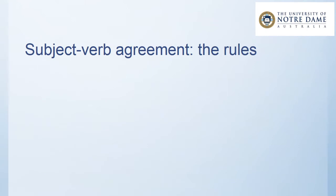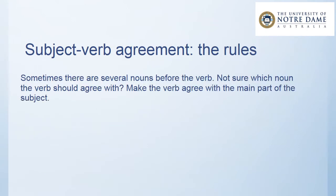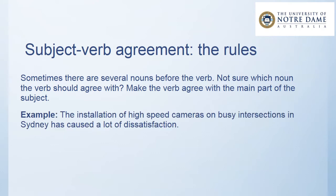Let's talk about some more rules. Sometimes there are several nouns before the verb. If you are not sure which noun the verb should agree with, you should always make the verb agree with the main part of the subject. For example: 'the installation of high-speed cameras on busy intersections in Sydney has caused a lot of dissatisfaction.'